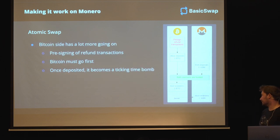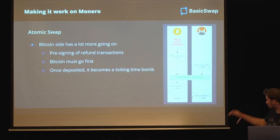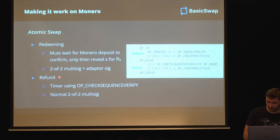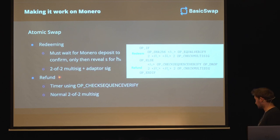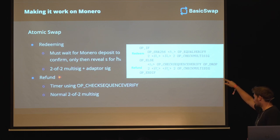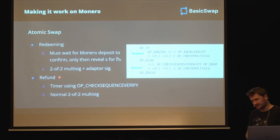The Bitcoin side, however, has a lot more going on. It has all the pre-signing of the refund transactions. There are certain limitations - it must go first. And once deposited, the money on the Bitcoin chain basically becomes a ticking time bomb. So how does it actually work on the Bitcoin chain? Because that's where the magic is at. This is an example of the contract. And as you can see, it kind of looks like an HTLC - it has this SHA-256, this hashing part in it.